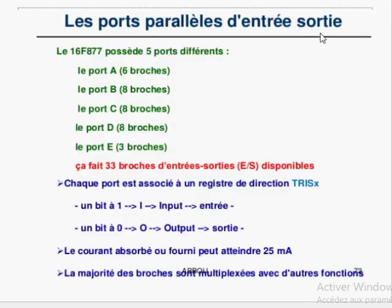Les ports parallèles d'entrée-sortie : il y en a cinq — le port A, B, C, D et E. Le port A est sur 6 bits, les ports B, C et D sur 8 lignes d'entrée-sortie, et le port E sur 3 lignes. Chaque port dispose d'un registre de direction TRIS — TRISA jusqu'à TRISE — pour la configuration en entrée ou en sortie.